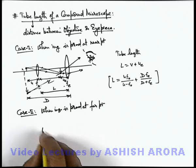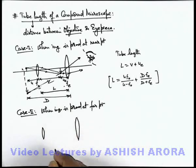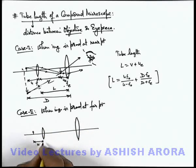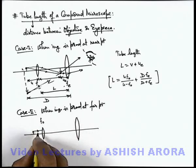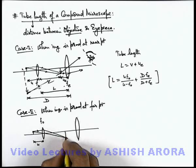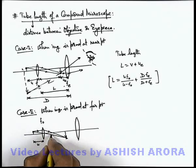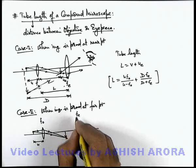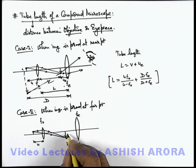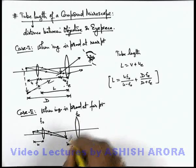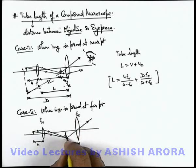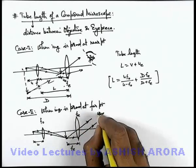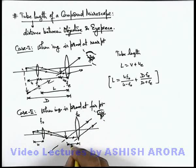In this situation, the final image is considered to be produced at infinity. If the object is located at a distance u from the objective lens, then the intermediate image is produced somewhere here. For the final image to be at infinity, the intermediate image must be located at a distance f_e from the eyepiece lens, because when an object is placed in the focal plane of a lens, its image is obtained at infinity. The light rays refracting from the eyepiece lens become parallel after refraction, so the final image is obtained at infinity.